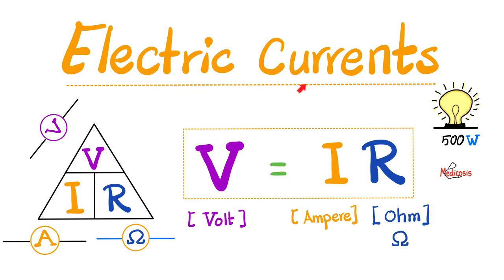Today we shall talk about electricity — not static electricity, but flowing electricity. It flows like a current. Just like water current flows from high to low pressure, creating a potential difference between two points, the electric current is similar — it passes from point A to point B, which have a potential difference.